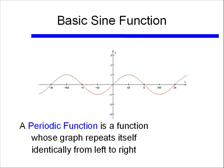A periodic function, such as our basic sine function, is a function whose graph repeats itself identically from left to right. For instance, if I look at this part of my sine function, I see that it repeats again here, and it will do that positively and negatively. Wherever you look at the sine function, you'll see this same cycle repeating itself.